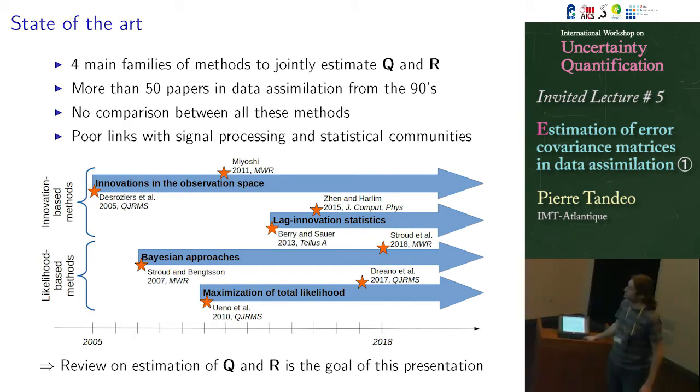So basically, I found out four main methods to estimate Q and R. The two first ones are based on innovation. I will explain what is innovation in data assimilation. And two other ones are related to likelihood estimation. So basically, here I put some timeline of the different methods used in data assimilation. So the first one, I think the most famous one, I will explain that later, is given by Des Rosiers, a French guy from Meteo France.